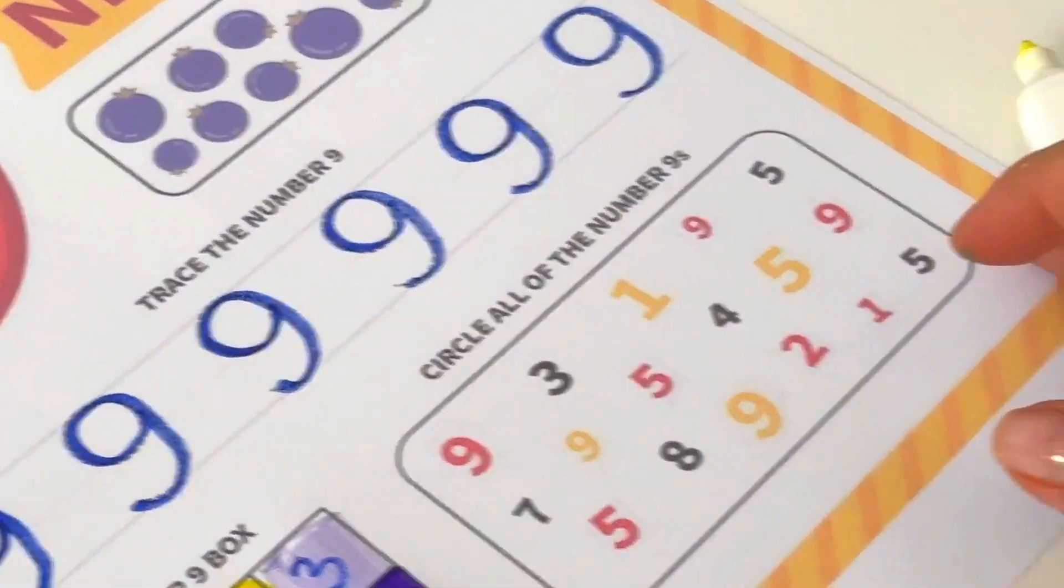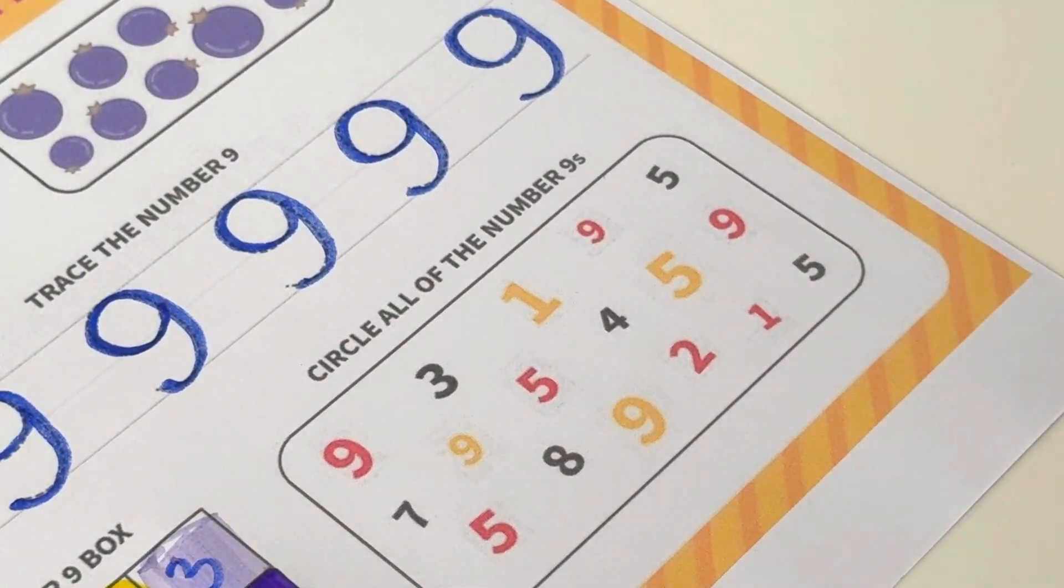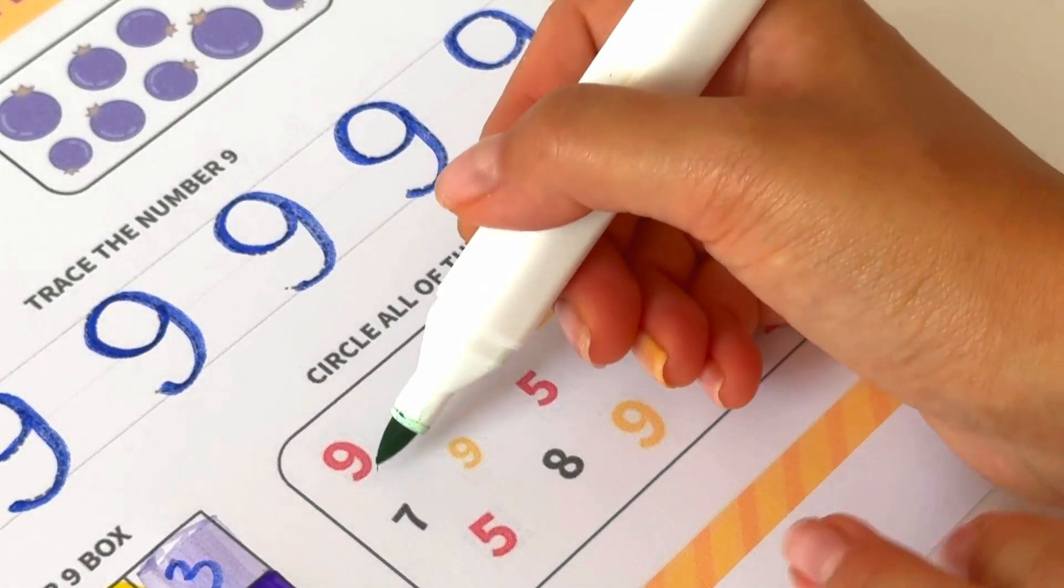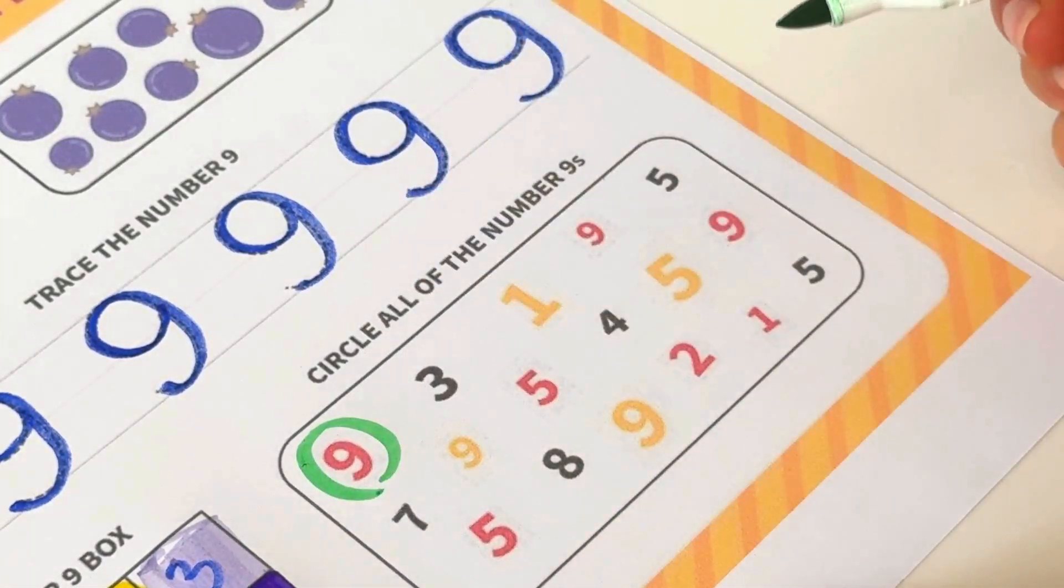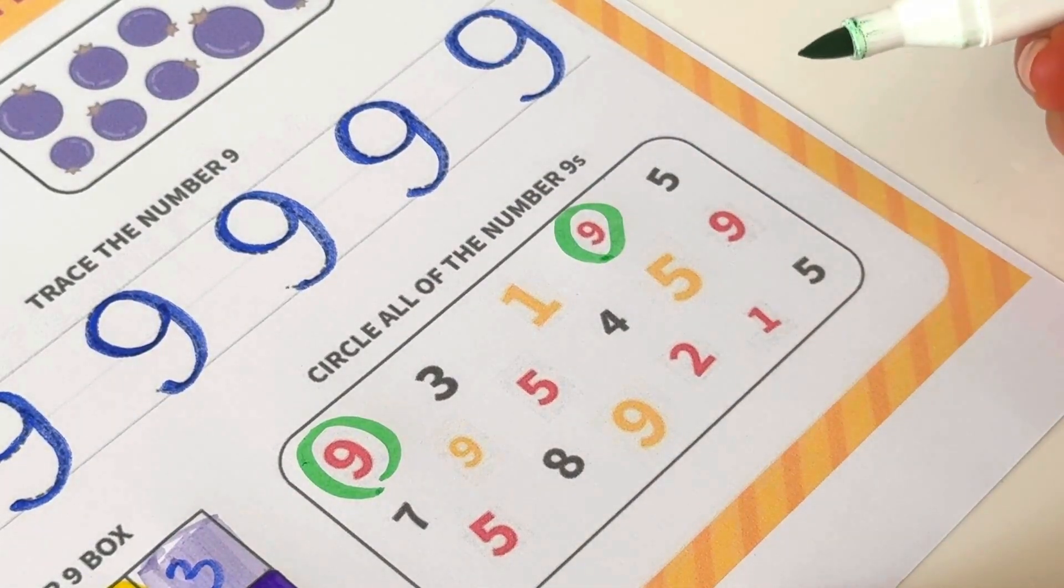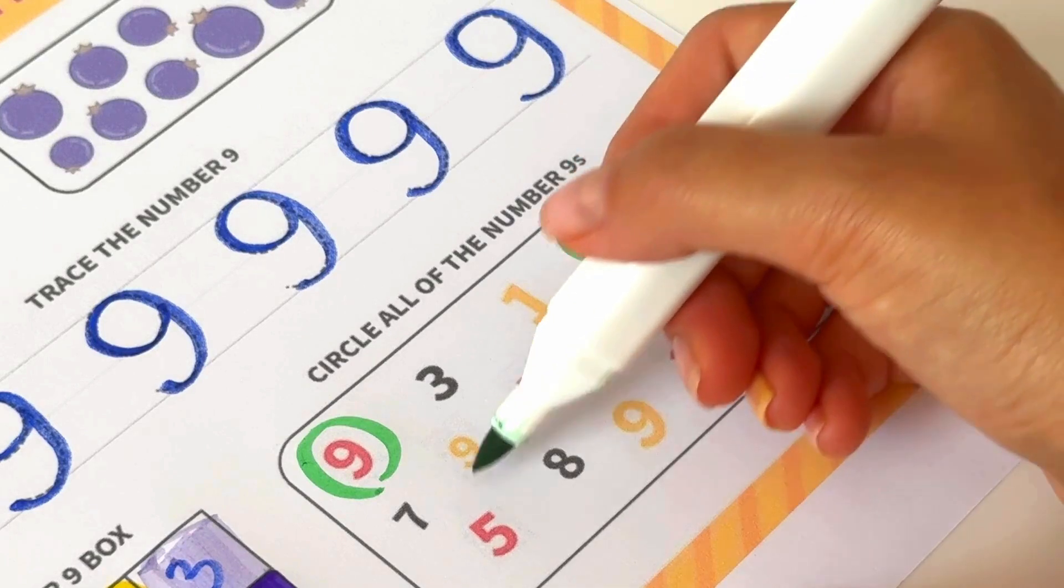Now we have to circle all of the number nine. Let's look for them. We have here number nine. And here it's tiny but it's still number nine. This one.